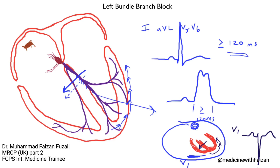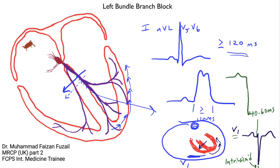That turnaround point of the signal is known as the intrinsicoid deflection — think of it as the bottommost part of the QRS complex in V1 and V2. Generally, the intrinsicoid deflection is around 40 to 60 milliseconds after the onset of the QRS complex. In left bundle branch block, you often lose that septal Q wave, and so what you have is a QS pattern. It's wide, and the intrinsicoid deflection is often at least 80 milliseconds after the onset of the QRS complex, indicating that this downward-sloping QS wave is slurred — it takes a while to reach its lowest point before it turns around and comes back again.